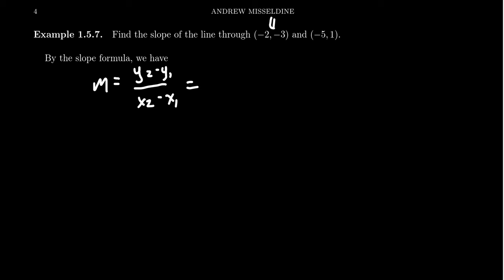So for the sake of example, we'll take the first point to be the first point, just as they're listed. And so we're going to take 1 minus a negative 3, the difference of the y's, the rise. Then we're going to take negative 5 minus negative 2, the difference of the x's, the rise over run.